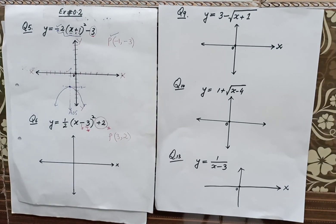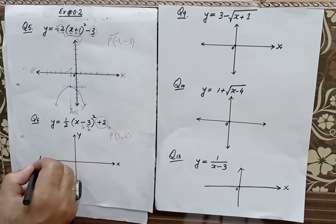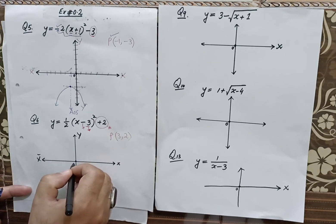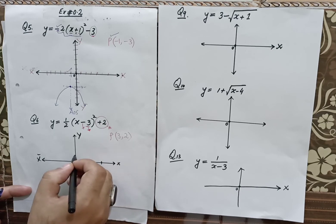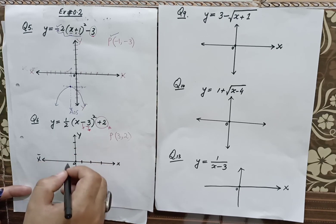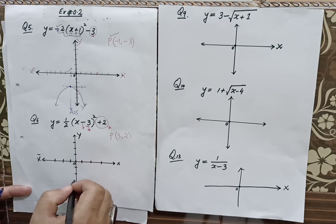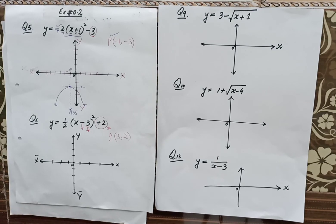Dear students, now we can define this vertex first. Here the x-axis and y-axis are already developed. We have positive and negative sides and our origin. Let's scale: positive 1, 2, 3 and negative 1, 2, 3 on both axes. Dear students, now our vertex is at (3, 2).